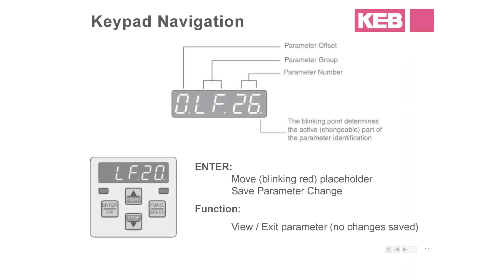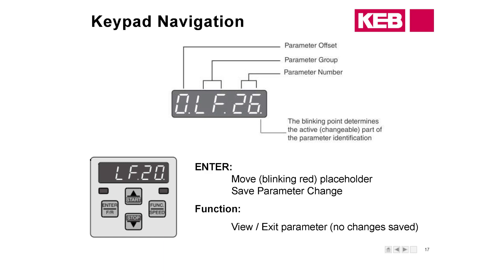The parameter structure is laid out so that on the far left we have the parameter offset number, in the middle we have the parameter group name, and on the right we have the parameter number itself. The flashing cursor dictates what you can change — wherever the flashing cursor is on the screen allows you to change either the parameter number, group, or offset.